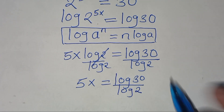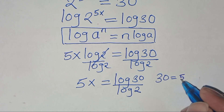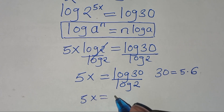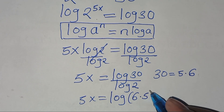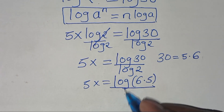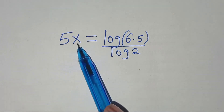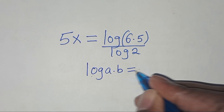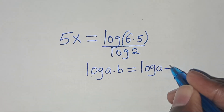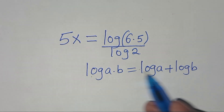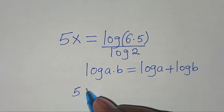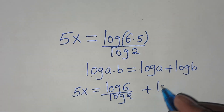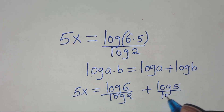We can express 30 as 5 times 6, so 5x equals log(6 times 5) divided by log 2. Since log(6 times 5) is in the form of log(a times b), which equals log a plus log b, applying this property gives us 5x equals (log 6 divided by log 2) plus (log 5 divided by log 2).